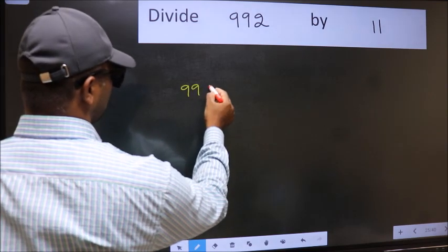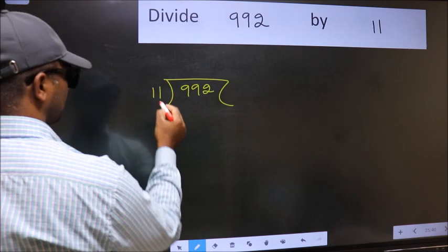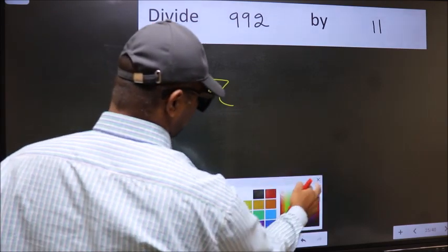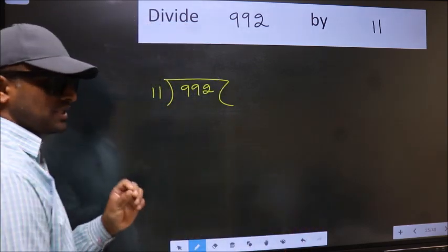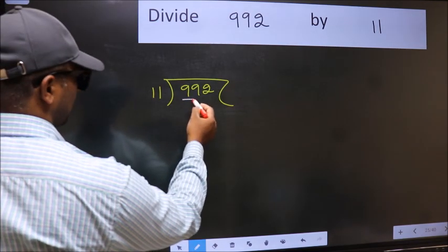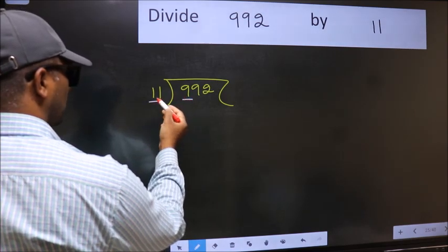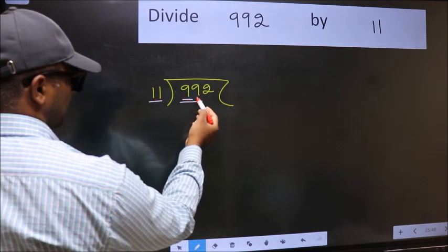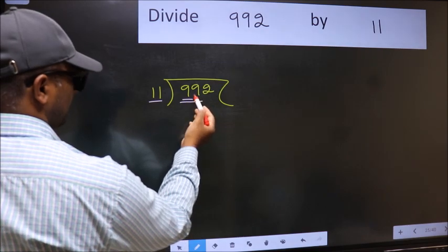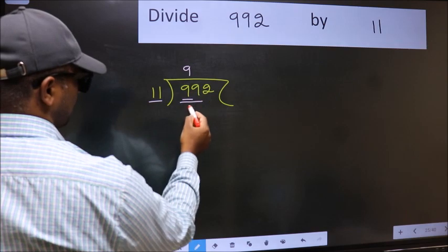Okay, 992 and 11 here. This is step 1. Next, here we have 9 and here 11. 9 is smaller than 11, so we should take two numbers: 99. When do we get 99 in the 11 table? 11 nines is 99.